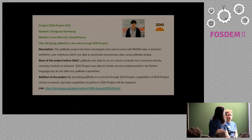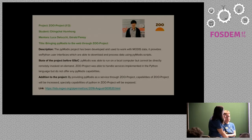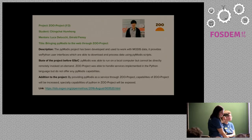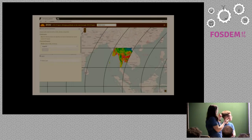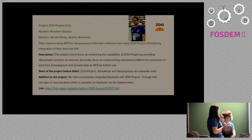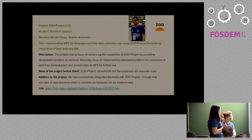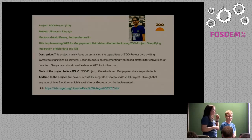Finally, two projects were developed within the ZOO project. One brings PyModis to the web through ZOO project — PyModis downloads and processes MODIS data, making that functionality seamlessly available on the web. The last project combined ZOO, JGrass tools, and Geo Paparazzi — three software tools — creating a binding between them.